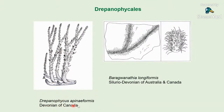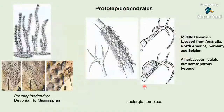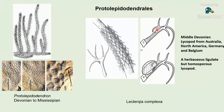In Drepanophycales — herbaceous habit — you can see Drepanophycales from the Devonian of Canada, where sporangia are born on the adaxial surface of small leaves — the characteristic feature of lycopods. This is Baragwanathia longiformis from the Silurio-Devonian of Australia and Canada. In the order of Proto-Lepidodendrales, we have Proto-Lepidodendron, growing from Devonian to Mississippian — herbaceous. You can see Leclercchia: a herbaceous axis bearing complexly forked leaves with small ligules, sporangia producing homospores, and the ligule also present distal to the sporangium.